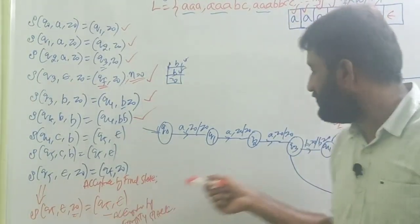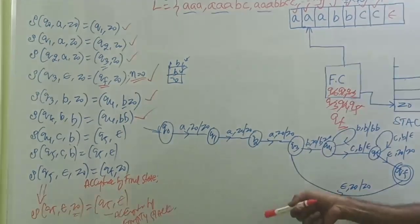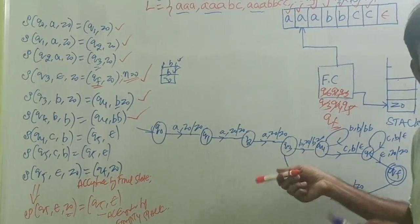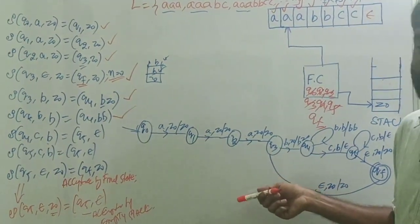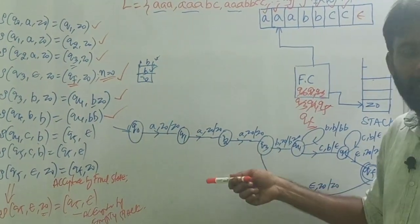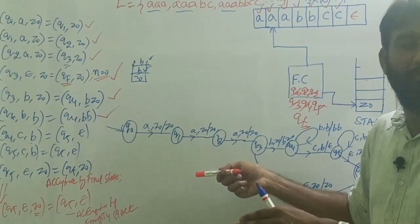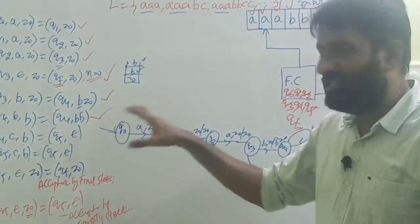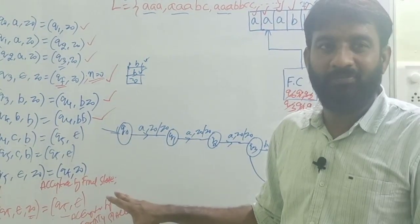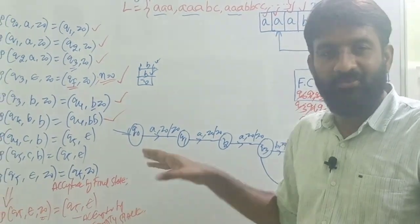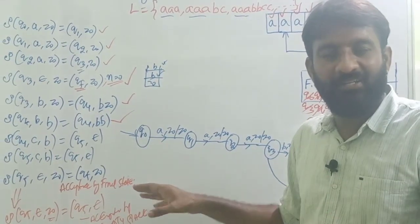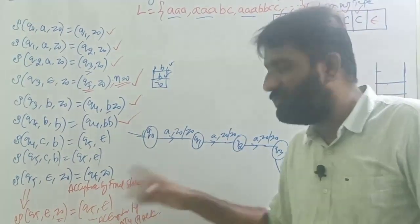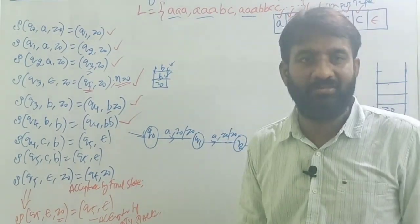Note: I am not adding this empty-stack transition to the figure, because if I add it the figure would become non-deterministic in nature. I am drawing the deterministic pushdown automata only. So please remember, when solving your problem, whether they ask for acceptance by final state or acceptance by empty stack — based on that, write the transitions accordingly.